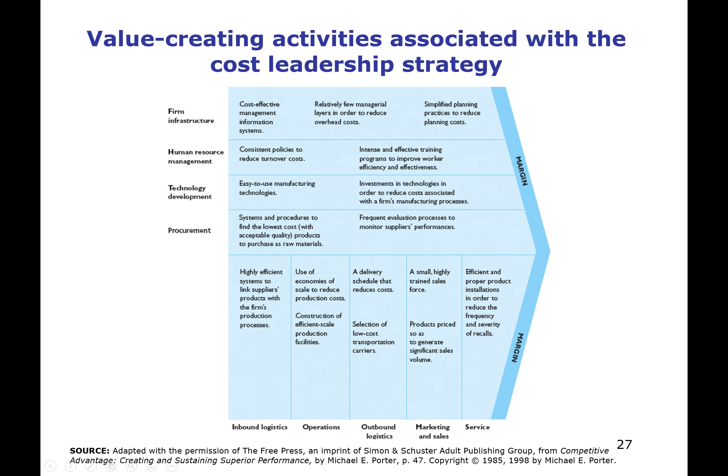In the value chain, you need to make a series of decisions about firm infrastructure, human resource management, technology, procurement, logistics, operations, outbound logistics, marketing, sales, and service — all focusing on achieving cost leadership. Not every firm will be able to make decisions that produce cost leadership in every aspect of their value chain, so in a way that is aspirational.